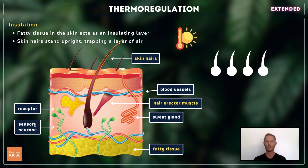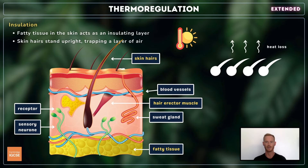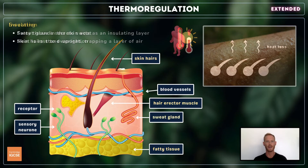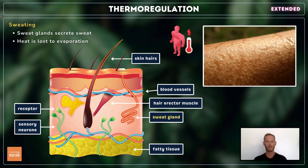Conversely, in hot conditions, hair erector muscles relax, allowing skin hairs to lie flat. This promotes unrestricted air circulation, which increases heat loss to the environment and helps to cool down the body. Whenever core body temperature increases, sweat glands in the skin secrete sweat, which evaporates from the surface of the skin, taking thermal energy with it.